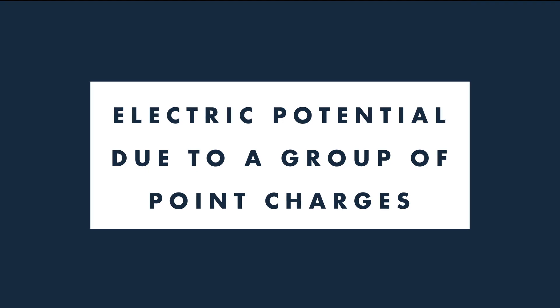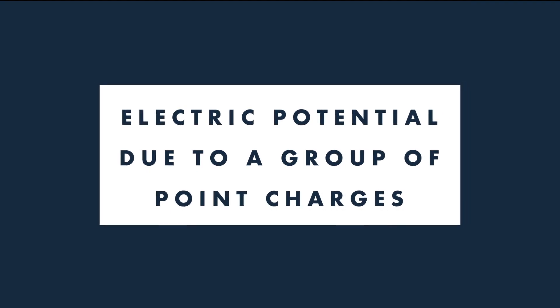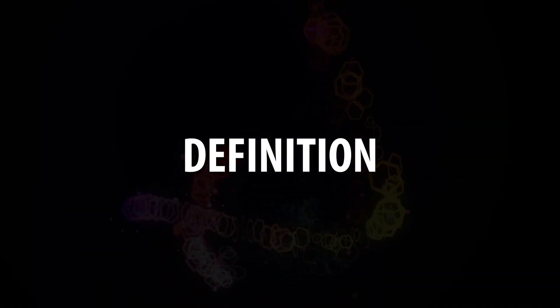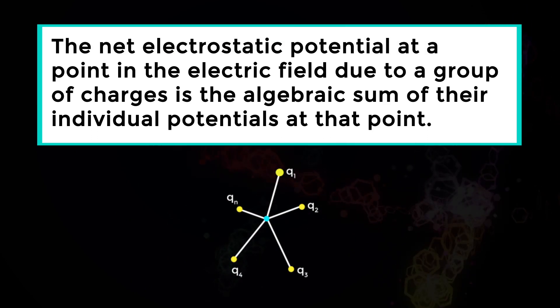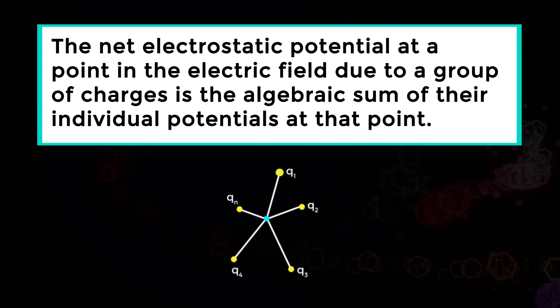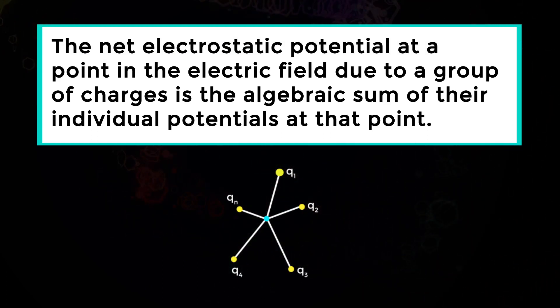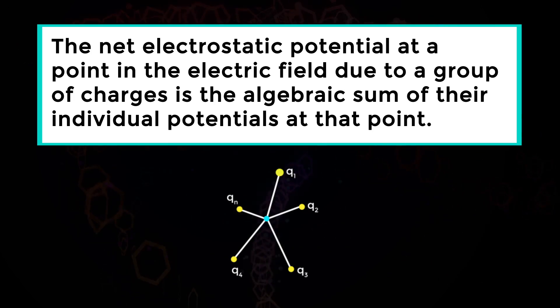Electric Potential Due to a Group of Point Charges. The net electrostatic potential at a point in the electric field due to a group of charges is the algebraic sum of their individual potentials at that point.